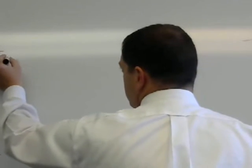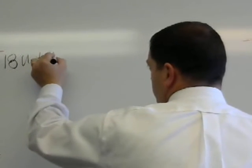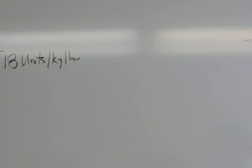The doctor has ordered the heparin drip to be infused at 18 units per kilogram per hour. So now that I know that I have 18 units per kilogram per hour, I need to find out what is my patient weight.